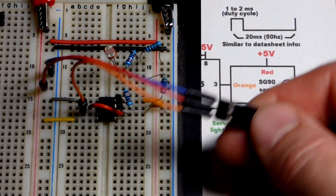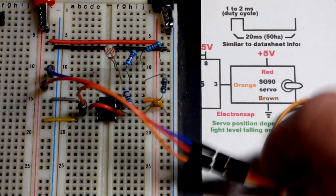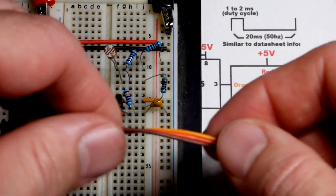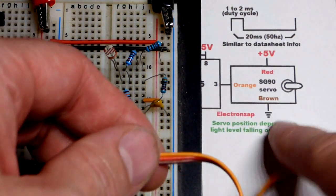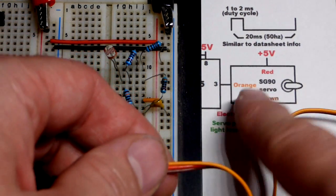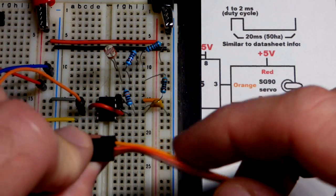As well, the red one on the servo there is the positive supply, brown is the negative supply, and then orange there is the signal.